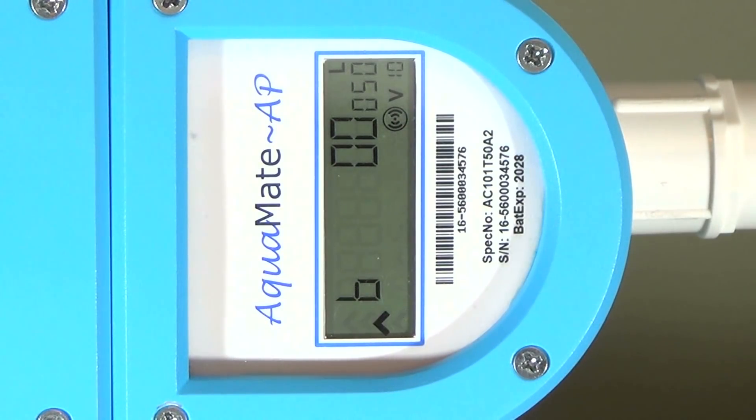The unit of water usage is L which is liters and can be configured to other units like gallons or cubic meter. The radio icon shows that the radio communication is active.